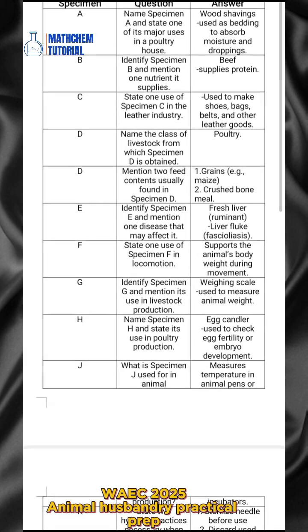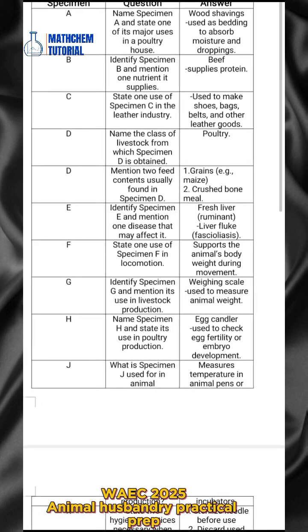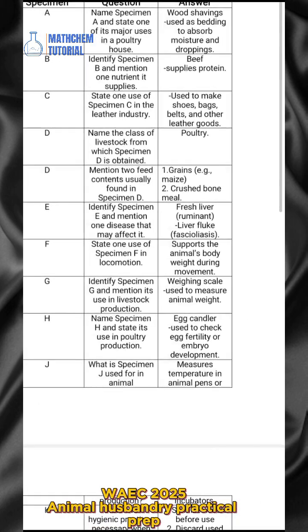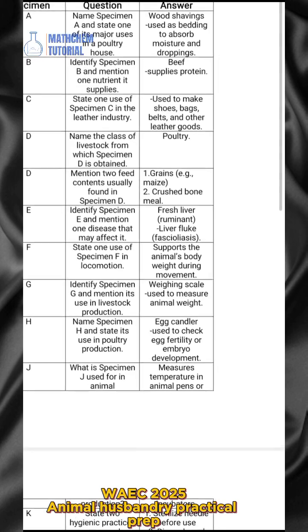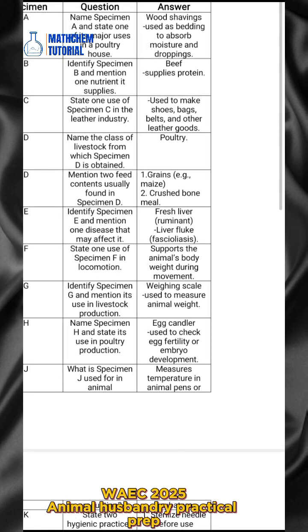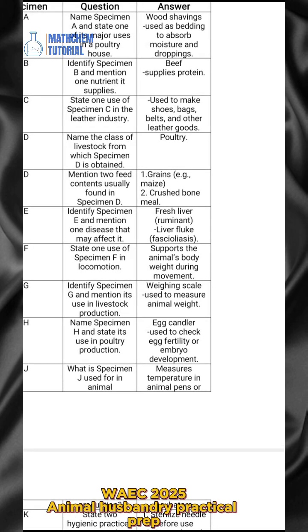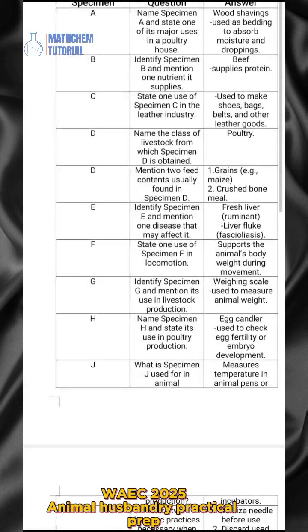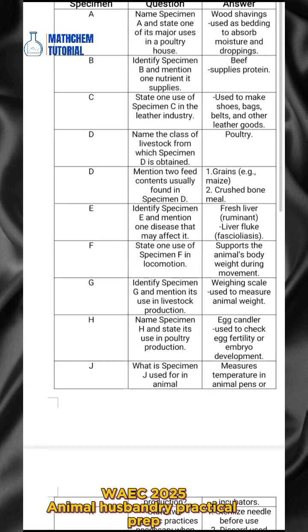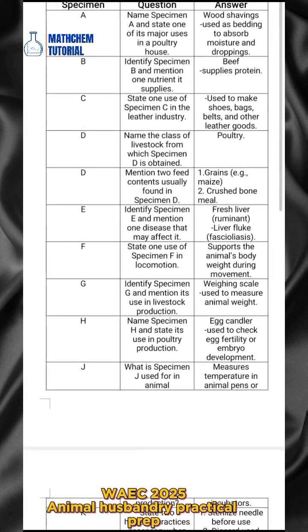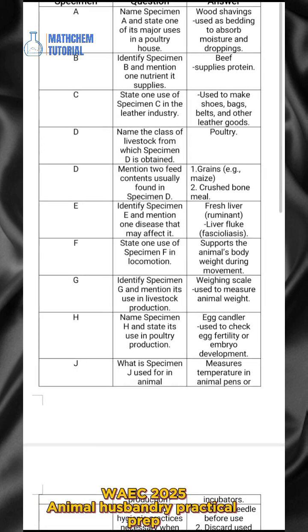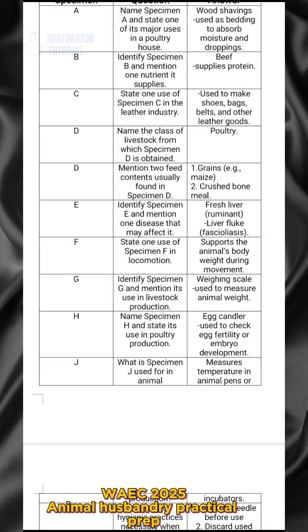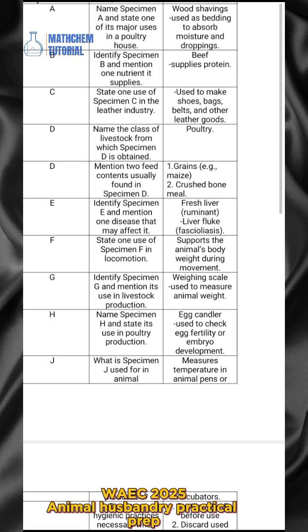For specimen F, you are asked to state one use of specimen F in locomotion. The answer is: it supports the animal's body weight during movement.